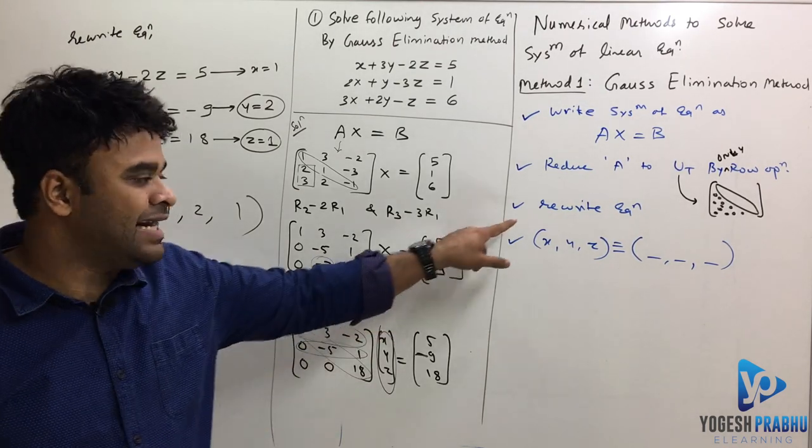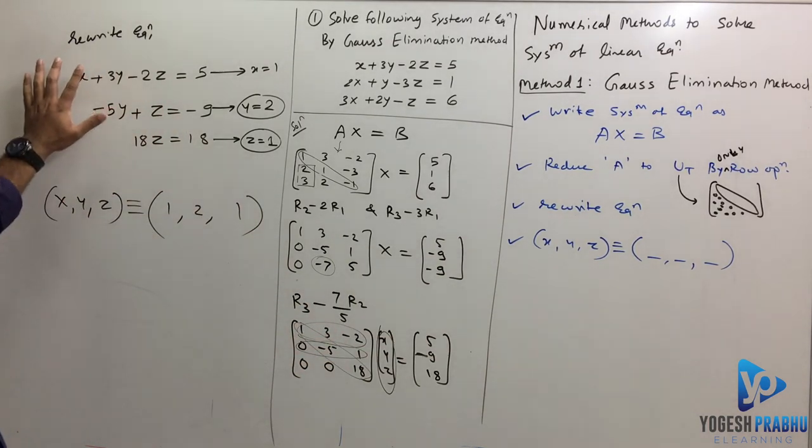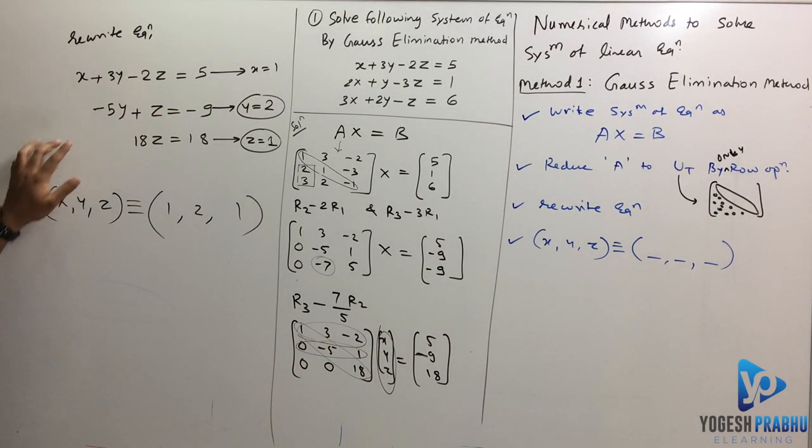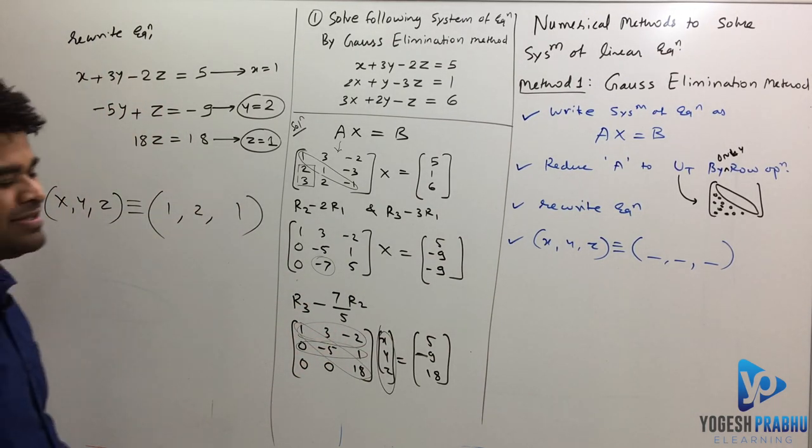And rewrite the equations. Once you get this in the form, rewrite the equations. And write down the final answer of x, y, z. Very simple.